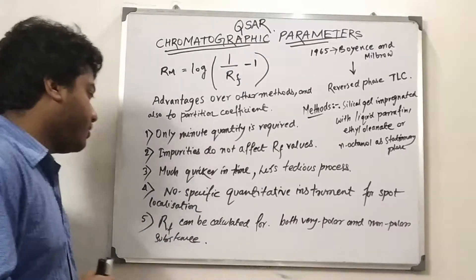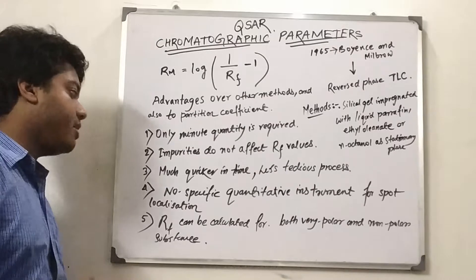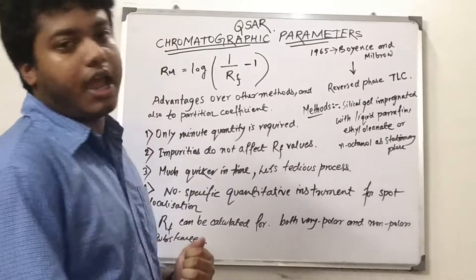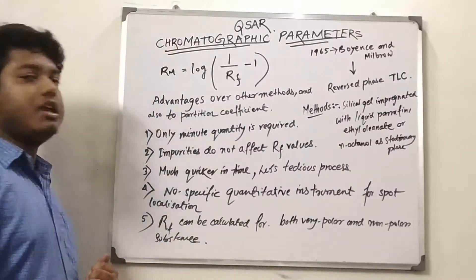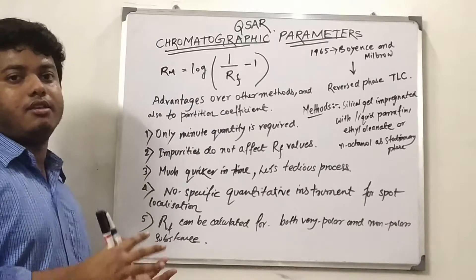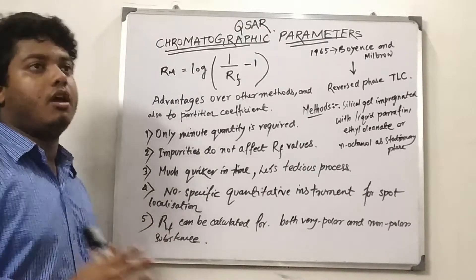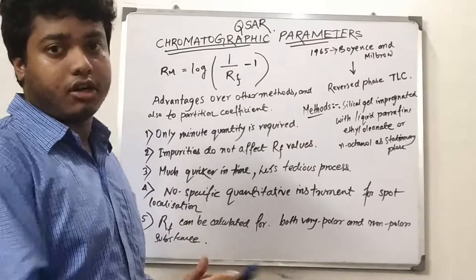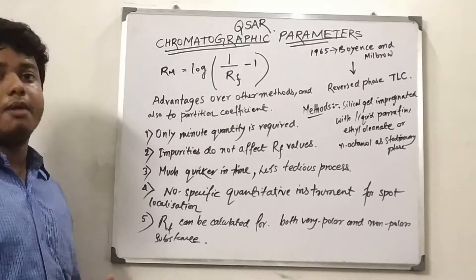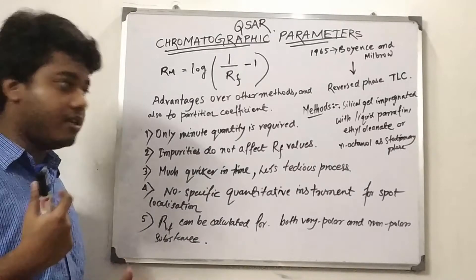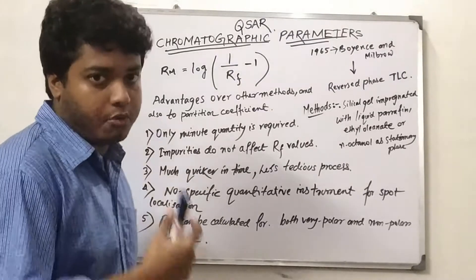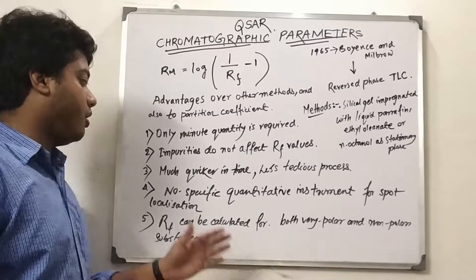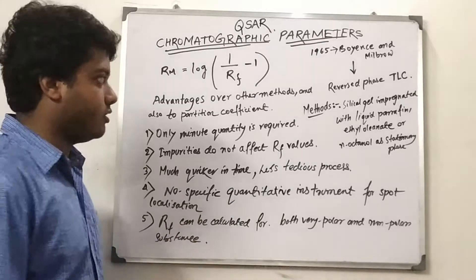Another advantage is that Rm values can be calculated for both very polar and non-polar substances. This is a limitation in the traditional octanol-water partition coefficient method, where various types of non-polar substances and polar liquids cannot be employed. With chromatographic parameters, those restrictions are eliminated.